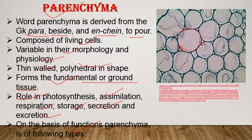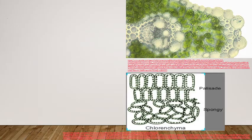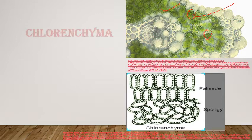On the basis of function, parenchyma is further classified. This is the picture of a leaf where parenchyma cells contain chloroplasts — the green colored cells visible in leaves. These parenchyma cells contain numerous chloroplasts and perform the function of photosynthesis. They are commonly known as chlorenchyma.